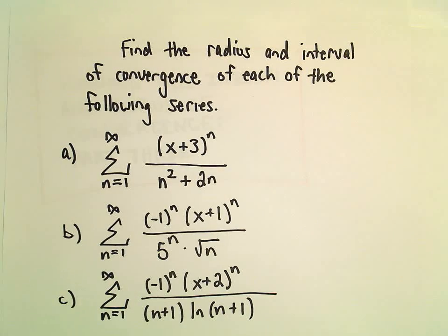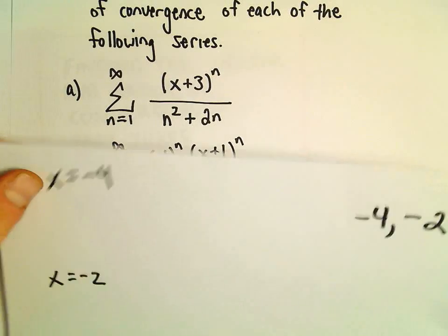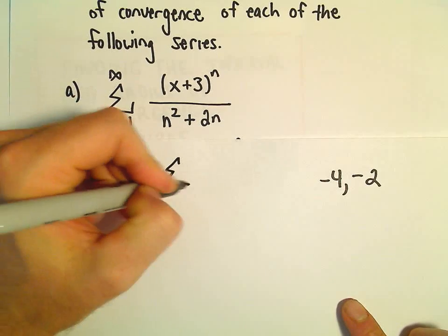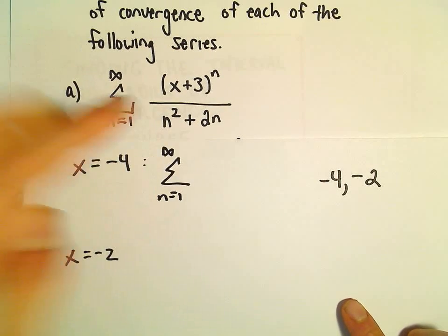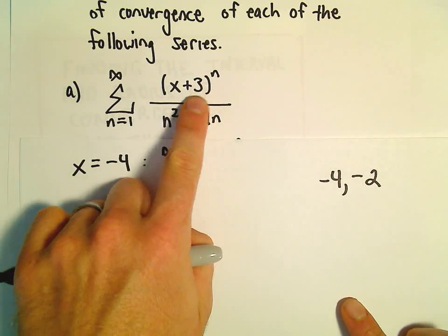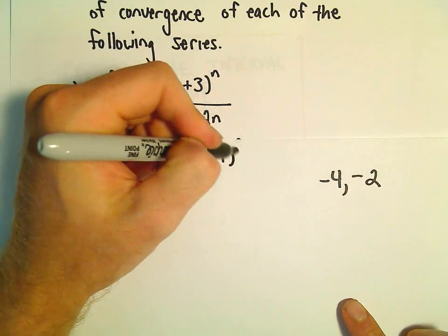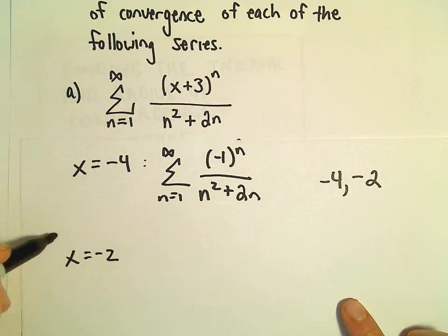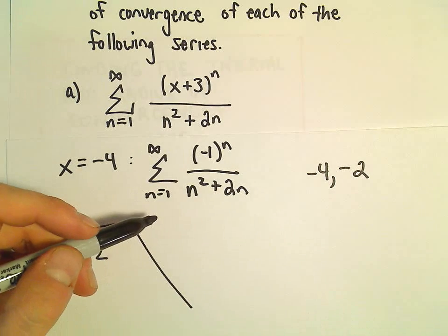So, let's go back to the original series. So, if we plug in negative 4, notice we'll have the series from 1 to infinity. We'll have negative 4 plus 3. That'll give us negative 1 to the n over n squared plus 2n. But this is just a nice little alternating series.